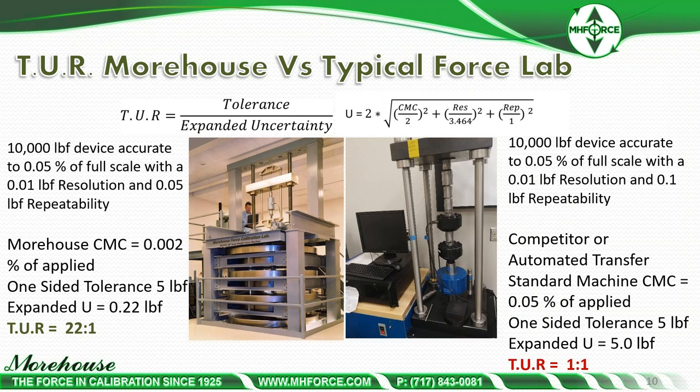For example, a 10,000-pound load cell with 0.05% of full scale accuracy, 0.01-pound resolution, and 0.05-pound repeatability all go into that denominator. Comparing Morehouse using primary standards (dead weights), the TUR would be 22 to 1. For a lab using secondary standards — a hydraulic force machine with 0.05% of applied — the TUR could be 1 to 1 or even lower.